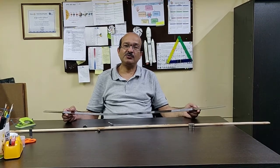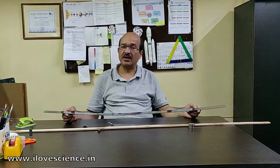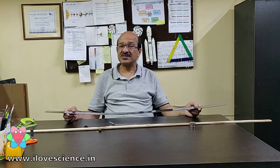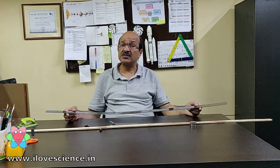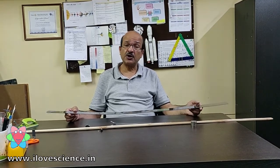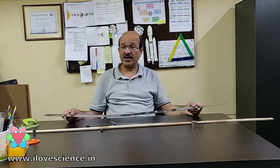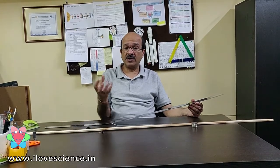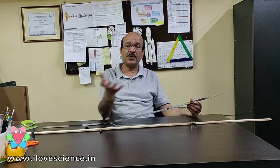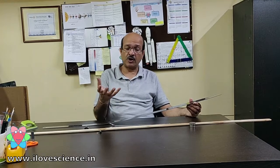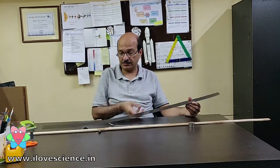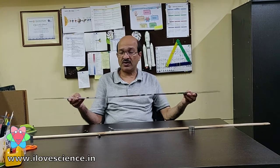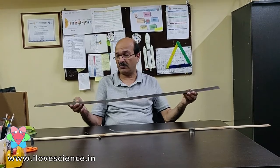Hello children, welcome to I Love Science. Today we will talk about center of gravity. The center of gravity of any object is the point where it can be assumed that the complete mass of that object is centered. In a long object, it is very easy to say where the center of gravity is.